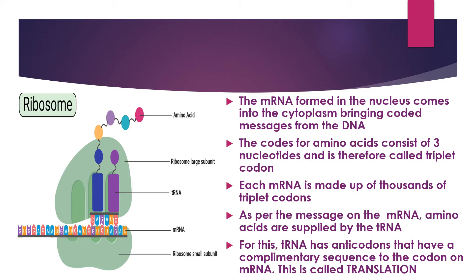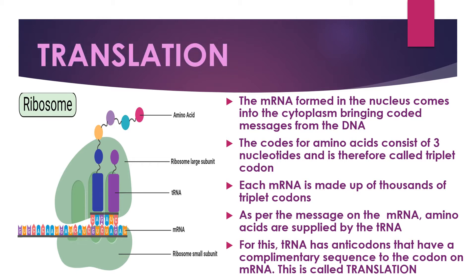Adenine teams up with uracil and guanine teams up with cytosine. In this diagram, the tRNA brings a complementary sequence — where the mRNA has guanine, the tRNA supplies cytosine. This complementary sequence brought by the tRNA is called translation, where the tRNA supplies anticodons in a complementary sequence to the mRNA.